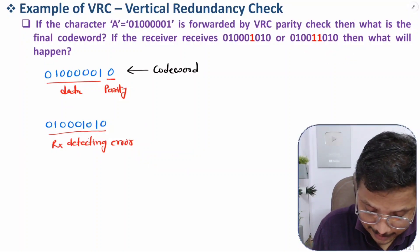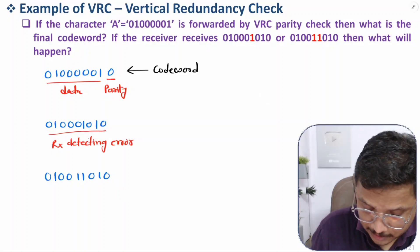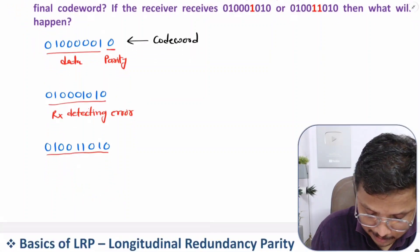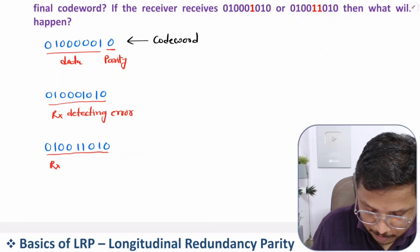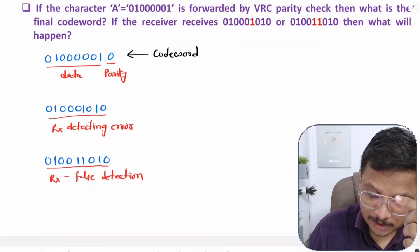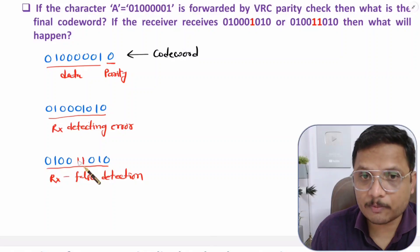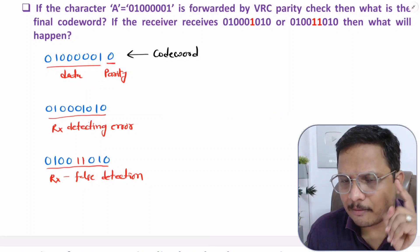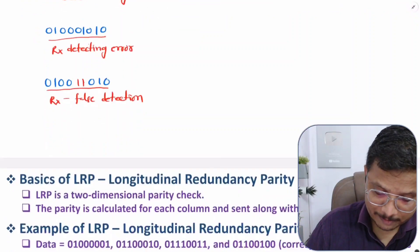In the second case, the received data is 0 1 0 0 1 1 0 1 0. The receiver counts the ones: one, two, three, four — four ones, so the receiver says the data is perfectly correct. But the transmitted data was different, meaning the receiver made a false detection. The reason is there are two-bit errors here, and because of two-bit error, the VRC method fails. VRC is a simple one-dimensional parity check method used for one-bit error detection only.